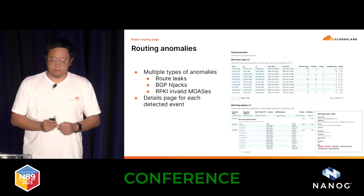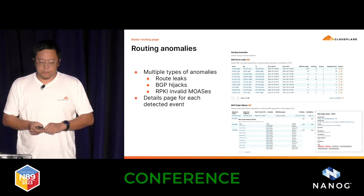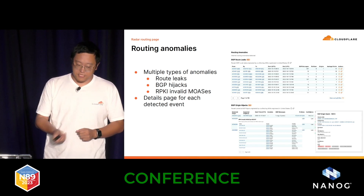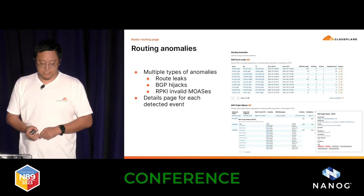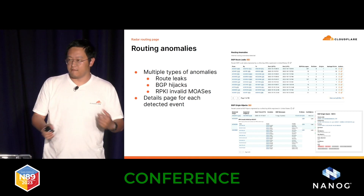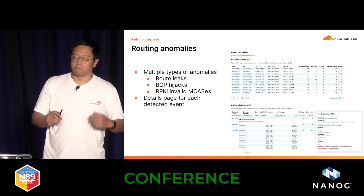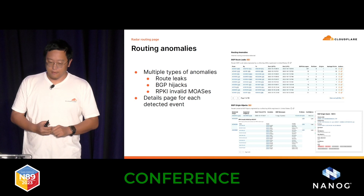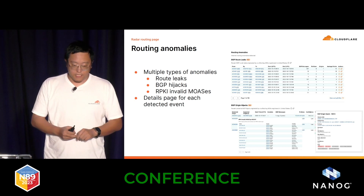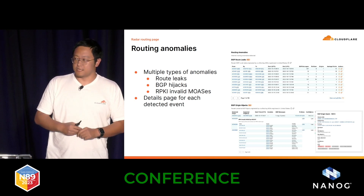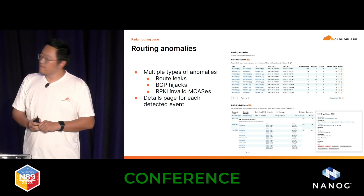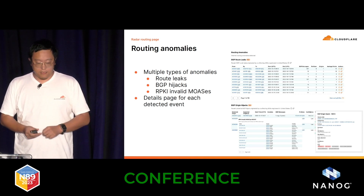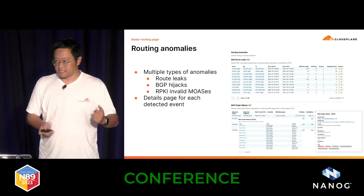The routing information also includes routing anomaly detections, and this is provided for free. We have route leak detections, BGP hijack detections, and a table showing RPKI-invalid MOAS (multi-origin AS) cases, which are likely anomalies that are not supposed to be out there. These are available as tables, and if you click on any one of the events, there's a detailed page showing more information. There are also other ways to access that, which I'll talk about later.